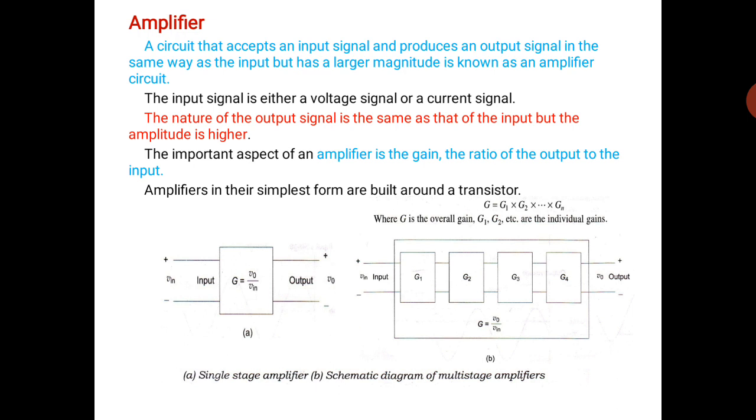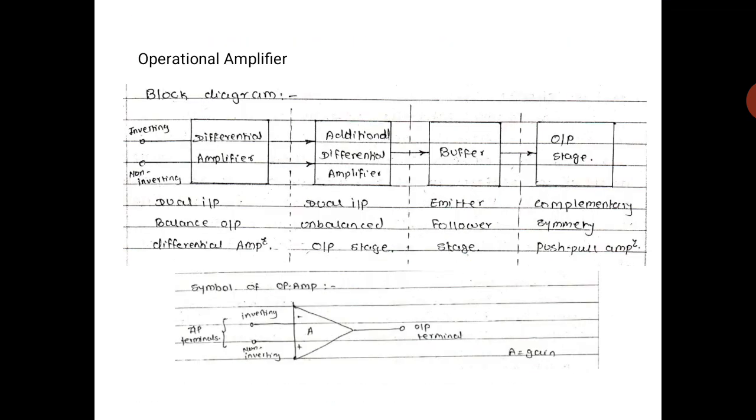Next, operational amplifier. The figure shows the block diagram of the operational amplifier. There are a number of blocks: first differential amplifier with input terminals inverting and non-inverting, additional differential amplifier, buffer, and output stage.